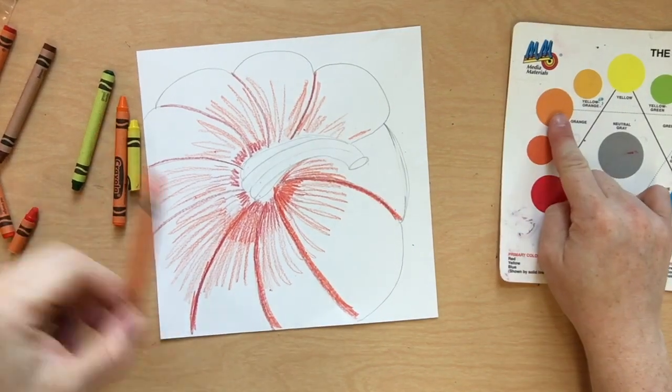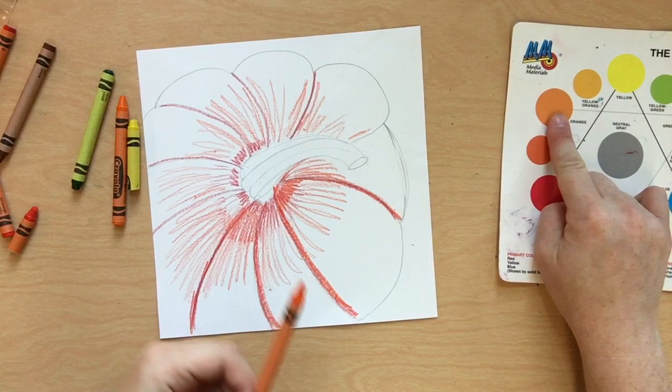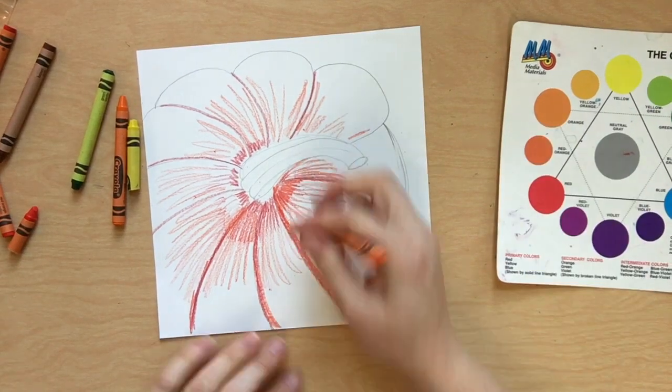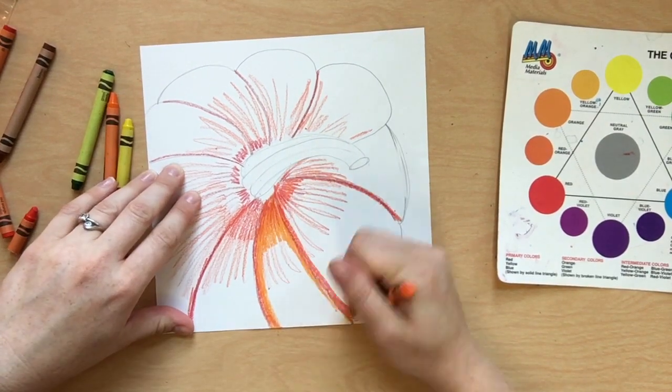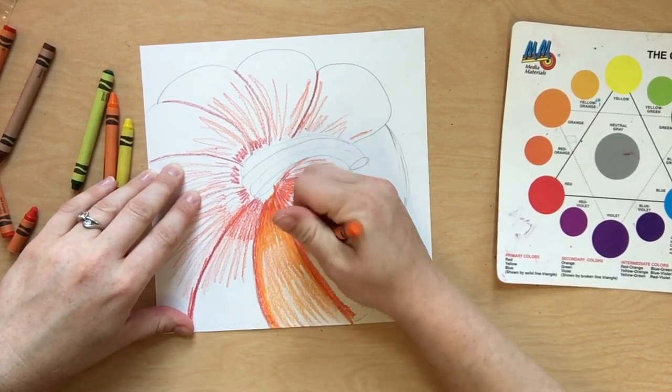Next, we'll use the regular orange crayon. Since pumpkins are generally orange, this is going to take up most of our drawing. You may need to stretch your hand out a little after this one. This is the color that takes the longest.